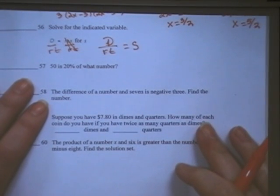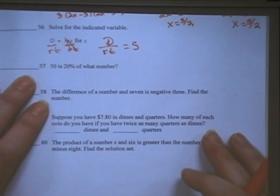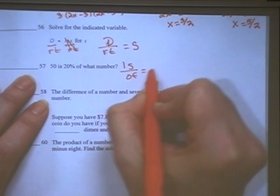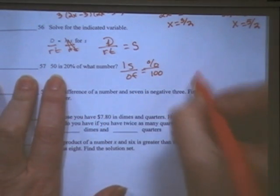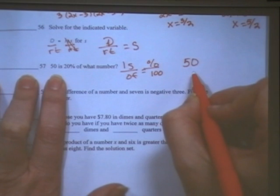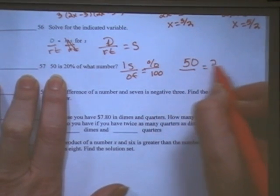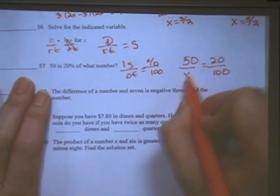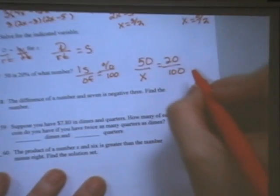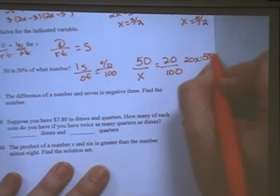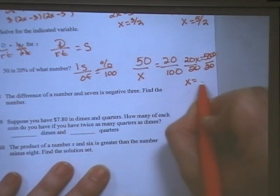For number 57, 50 is 20% of what number? I am going to choose to use is over of equals percent over 100. 50 is, so that's where my 50 goes with the is. 20%, so my 20 goes for my percent, there's always a 100 underneath the percent, of what number? So I do not know that number, and then I can just cross multiply. So I end up getting 20x is equal to 5,000. When I divide by 20, my x is equal to 250.